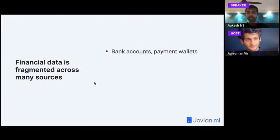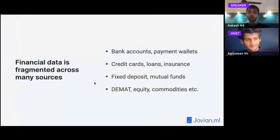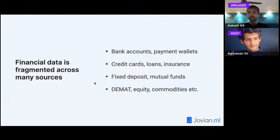The first problem AA solves: your financial data is fragmented across many sources — bank accounts, payment wallets, credit cards, loan accounts, insurance policies, fixed deposits, mutual funds, demat accounts, equity, commodities. Each requires a separate login and password. Before 2000, everyone had a physical folder with all their documents in one place. Now that's no longer the case, and this overhead needs to be solved.